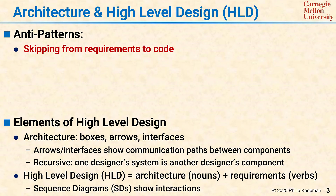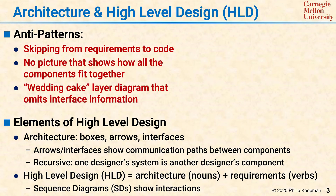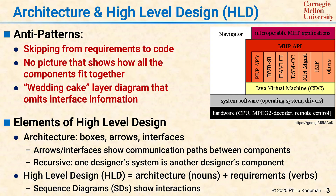Another anti-pattern is not having a picture that shows how all the components fit together. The third anti-pattern is relying solely on a wedding cake layer diagram like the one shown. That does tell you which components are there and gives you some idea of which are on top of others, but there's not any information on exactly how they interface together. So this is only a partial architecture diagram rather than a complete architecture diagram.